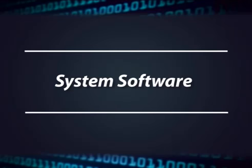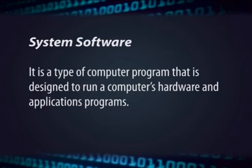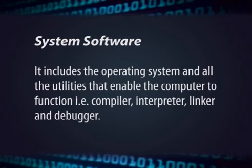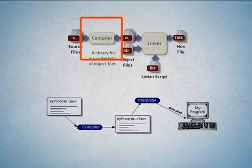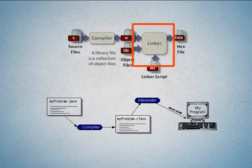System software is a type of computer program that is designed to run a computer's hardware and application programs. It includes the operating system and all the utilities that enable the computer to function — that is, compiler, interpreter, linker, and debugger.